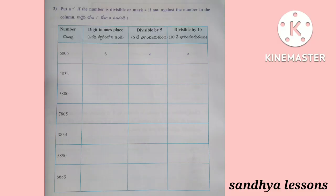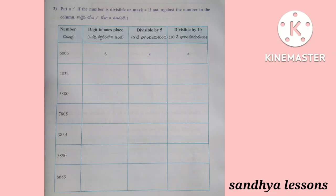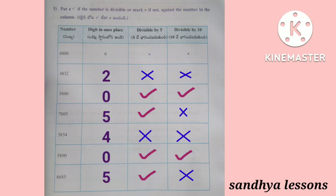Third Roman: Put a right if the number is divisible or mark cross if not. A number is divisible by 5 if the digit at its ones place is either 0 or 5. The numbers which have 0 at their ones place are exactly divisible by 10. In the given table form, we should recognize the digit in ones place and whether the number is divisible by 5 or 10.